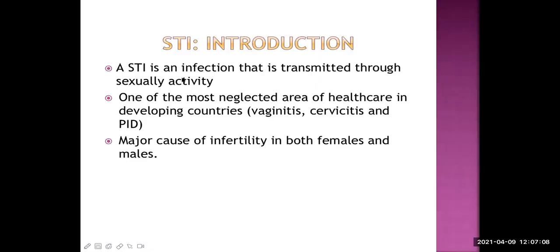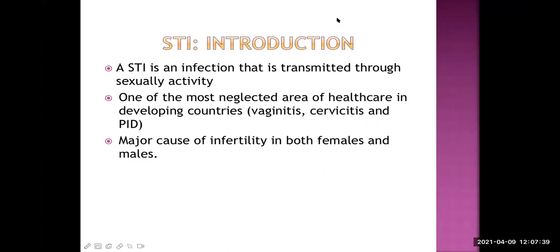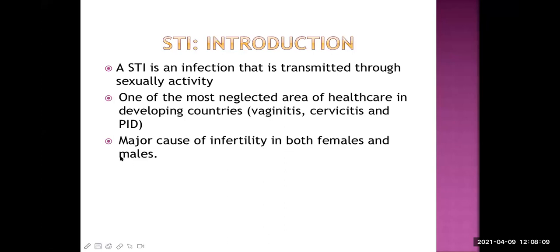STI, or sexually transmitted infection, is an infection transmitted through sexual activity from one partner to the other. This is one of the most neglected areas of healthcare in developing countries because patients do not want to present this problem to healthcare workers — they become shy to share this type of problem, even with their partner. Because of this, a lot of complications can develop, like infertility, ectopic pregnancy, and chronic PID. STI can be a major cause of infertility, especially in females, but also in males if the problem is neglected.